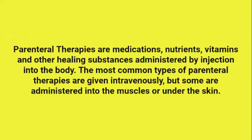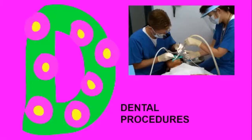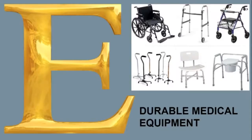The most common types of parenteral therapies are given intravenously, but some are administered into the muscle or under the skin. D is dental procedures. E is durable medical equipment — this is the most common along with your injections and medications. Durable medical equipment includes wheelchairs, walkers, canes, potty chairs, and shower chairs. I remember E for equipment — E for equipment.